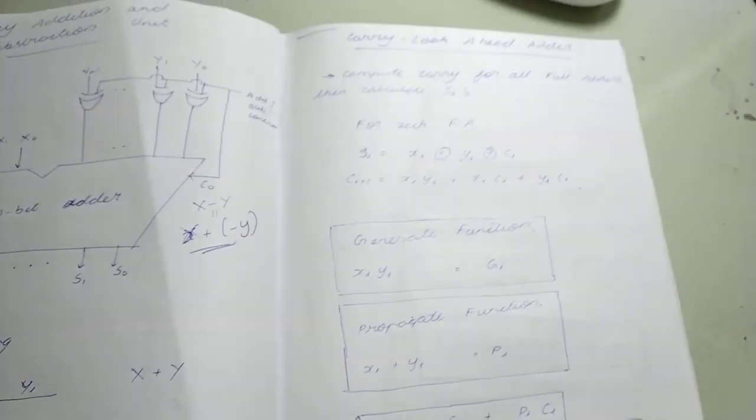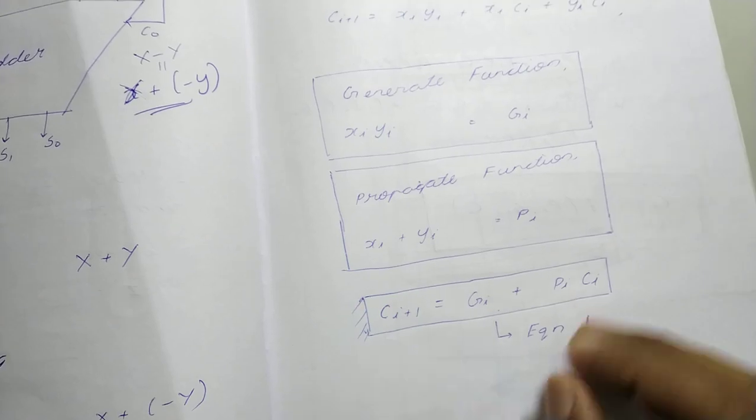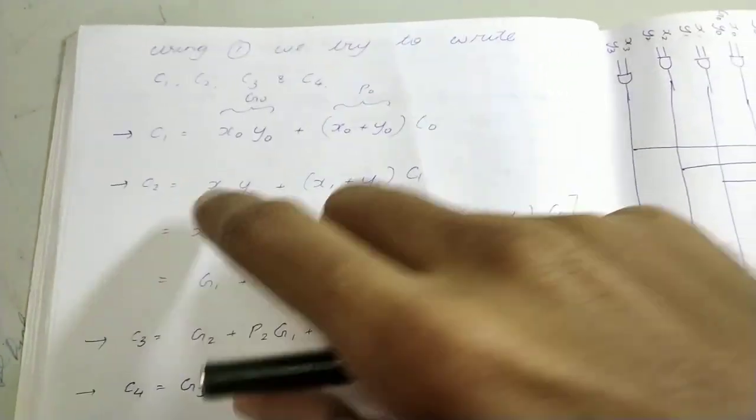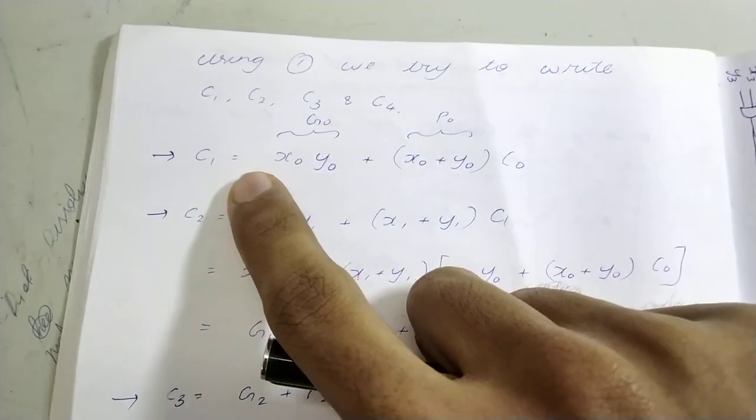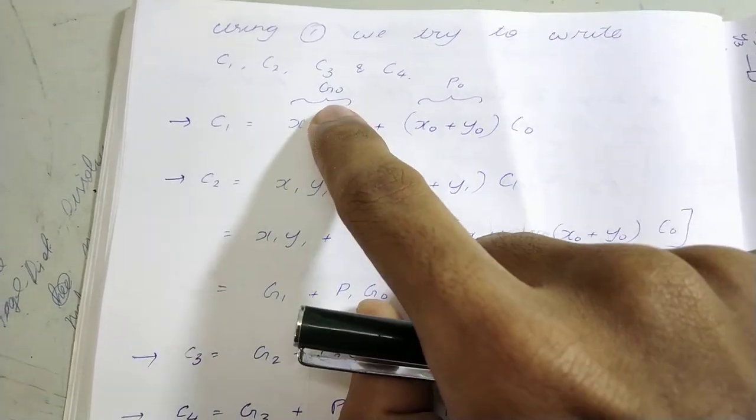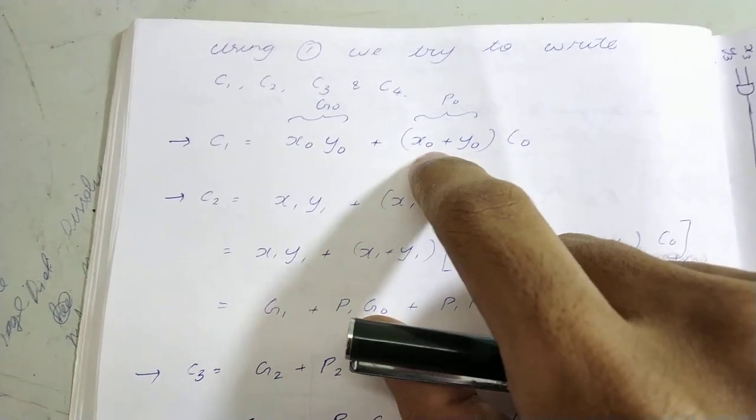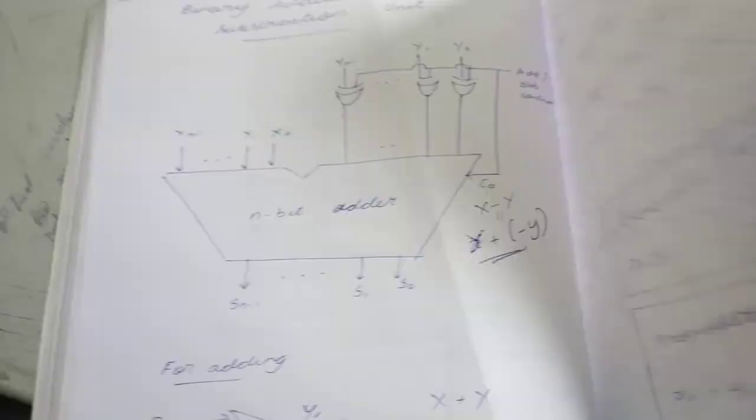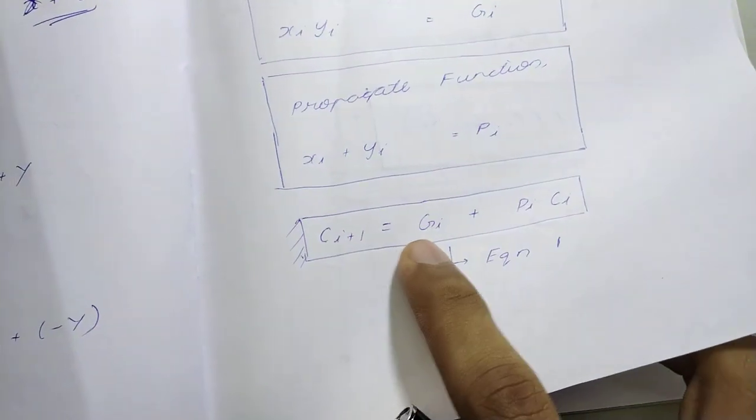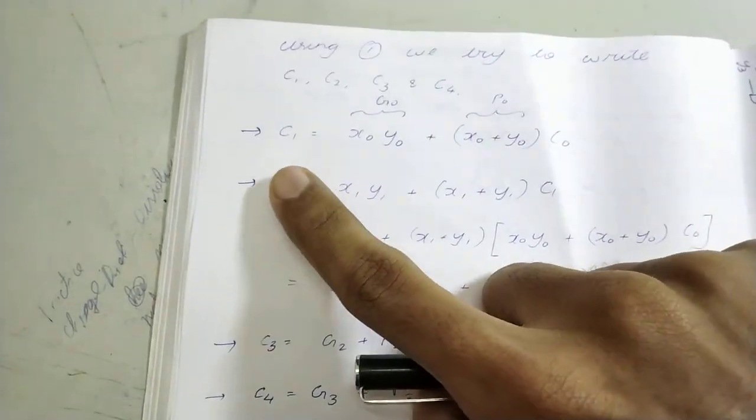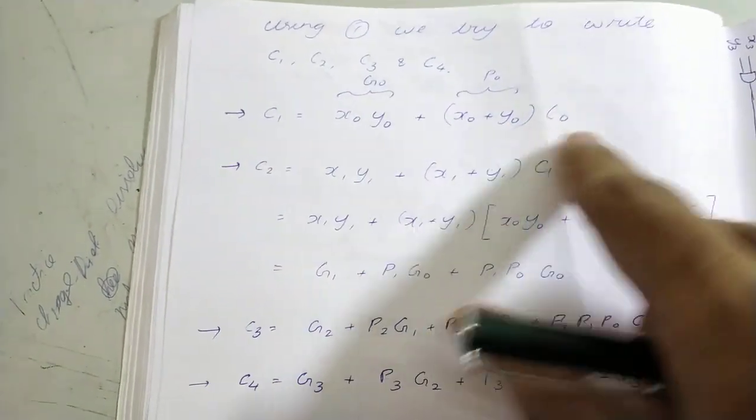That is what we are trying to find out using this equation. Using that same first equation we try to find c1. So c1 is x0 y0, that is g0, plus (x0 plus y0) times c0, that is p0 times c0. ci plus 1 equals gi plus pi ci. So we have c1 equals g0 plus p0 c0.